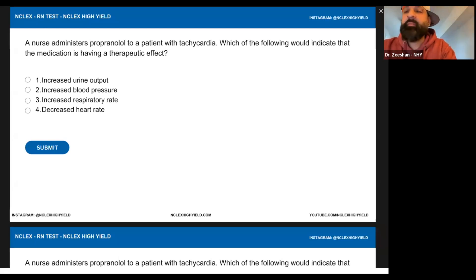We use the method, we never deviate away from it, which of the following would indicate that the medication is having a therapeutic effect. Okay, so don't jump ahead, please don't jump ahead. So now, a nurse administers propranolol to a patient with tachycardia. What type of a drug is propranolol?